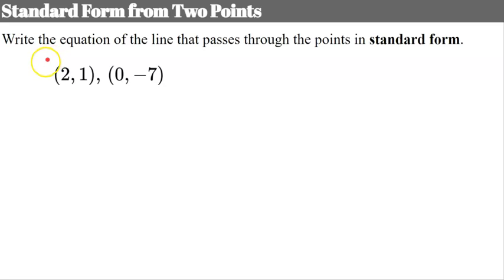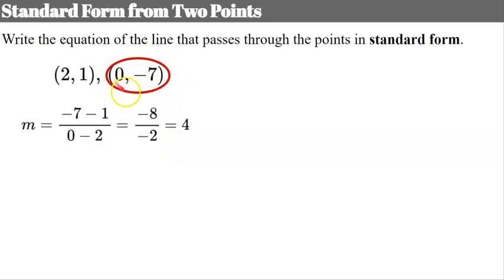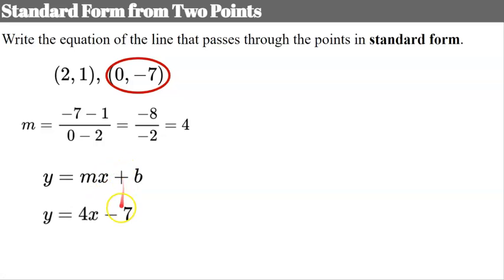Now we'll write the equation of a line that passes through two points in standard form, as we've done in slope-intercept and point-slope form previously. First, find the slope: the change in y is negative 7 minus 1, which is negative 8; the change in x is 0 minus 2, which is negative 2. That simplifies to 4. One point has an x-coordinate of 0, so it's the y-intercept. I'll use slope-intercept form to start: slope is 4 and y-intercept is negative 7.